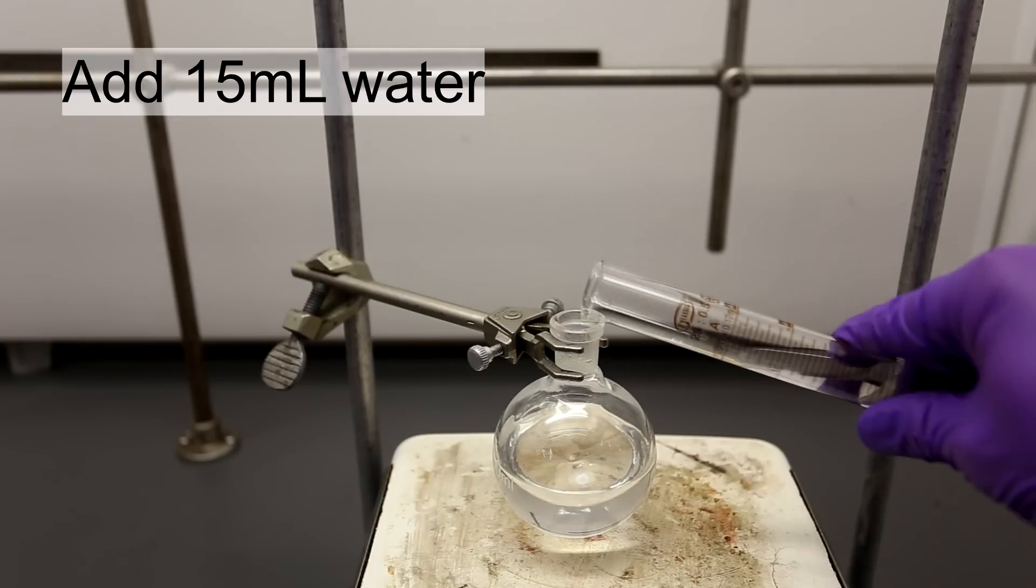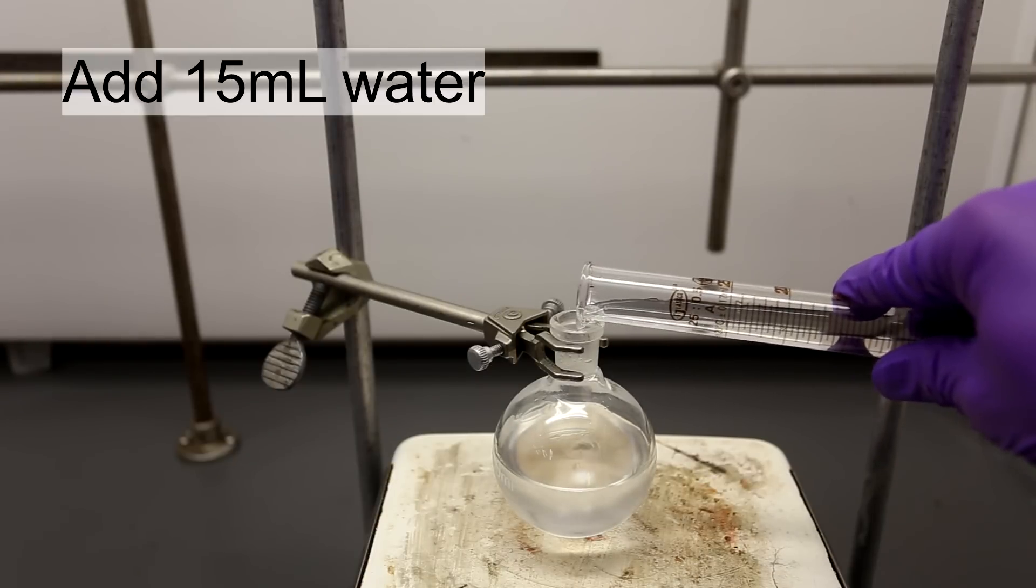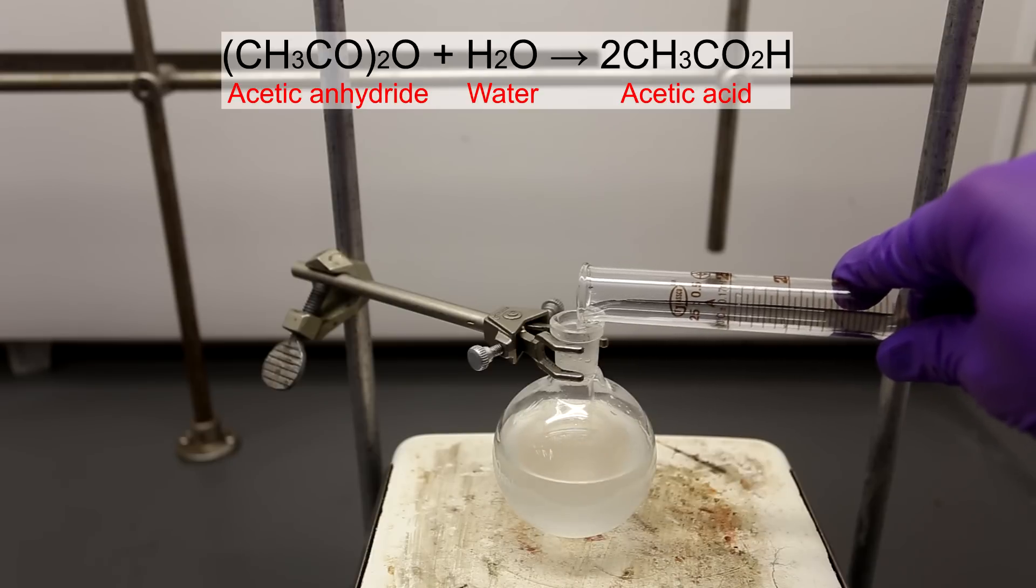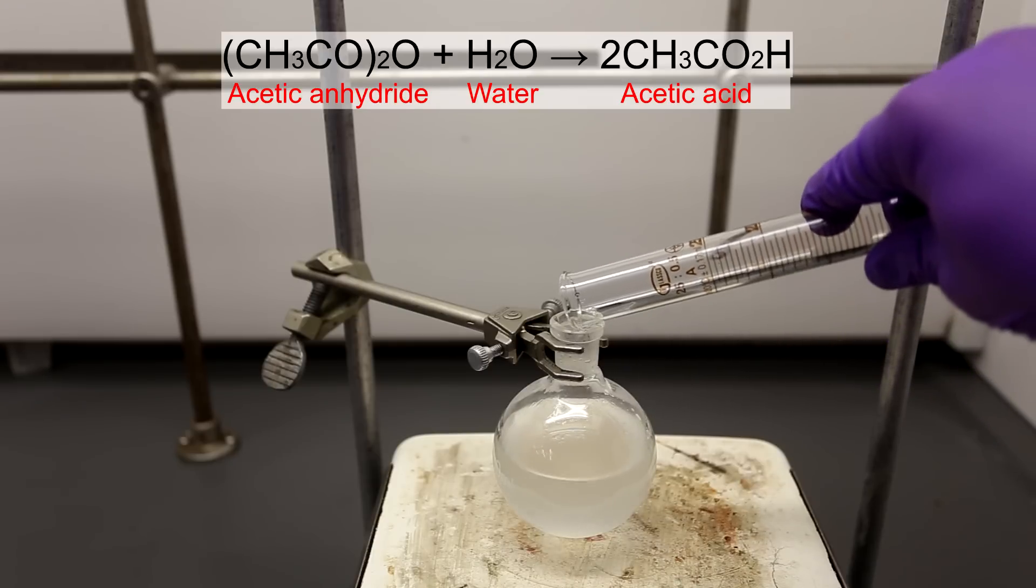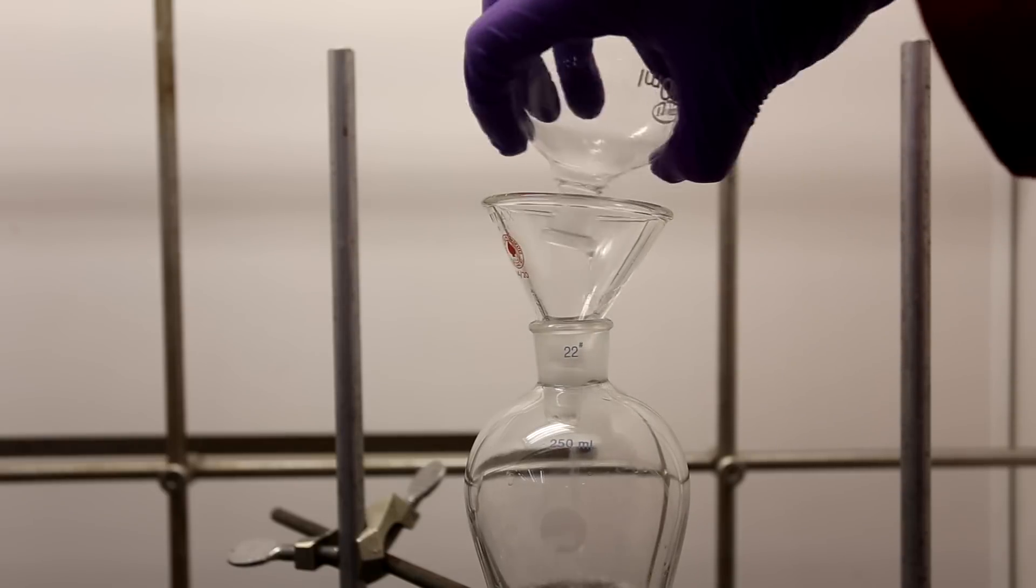15 milliliters of cold water was added to neutralize any remaining acetic anhydride. As shown above, water reacts with acetic anhydride to form two molecules of acetic acid. The solution was then transferred to a separatory funnel.